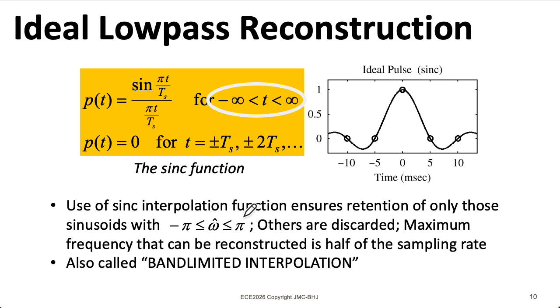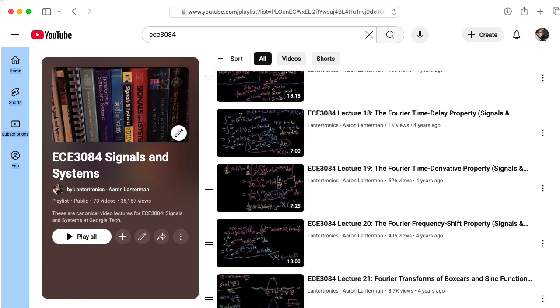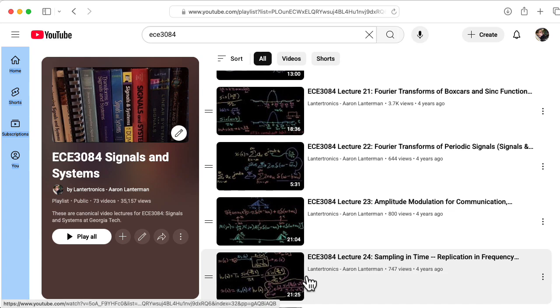This so-called band-limited interpolation procedure effectively reconstructs only the frequency components corresponding to omega hat landing between minus pi and pi, and it tosses out all the other aliases. Now the proof of this is beyond the scope of this class. We need material related to the continuous time Fourier transform to prove this, so we will wait on the proof until ECE 3084.